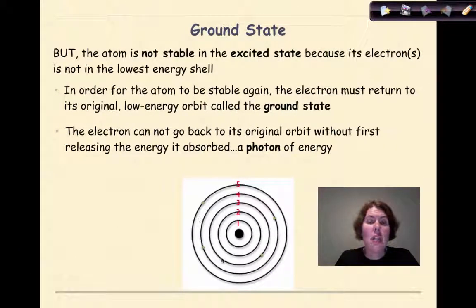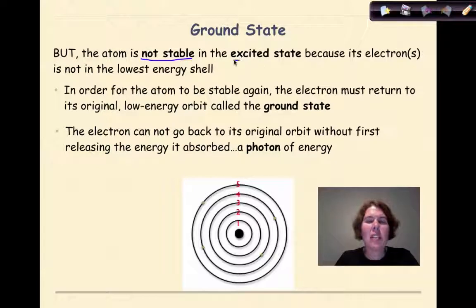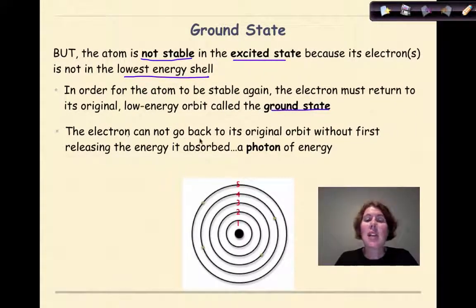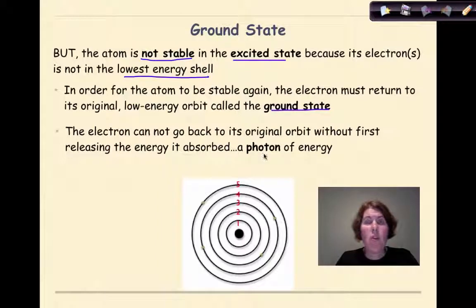Now let's talk about ground state. Remember, all of these electrons have gained energy, so the atom is not stable in this excited state because the electrons are not at the lowest energy shell. In order for the atom to be stable again, the electrons must return to their original low energy orbit, called the ground state. The electron cannot go back to its original orbit without first releasing the energy it absorbed. The way that we would see it is photons of energy, or light.